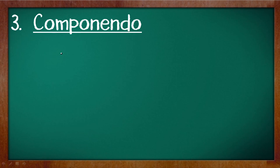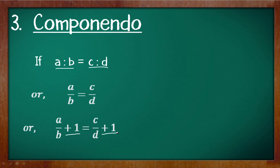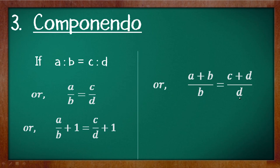Let us see the next property, componendo. Suppose we have a ratio a is to b is equals to c is to d. Writing this into fraction form we have a by b is equals to c by d. Now we add one on both sides. Finding the LCM of b and 1 gives b, and the LCM of d and 1 gives d. After addition we get a plus b divided by b is equals to c plus d divided by d.